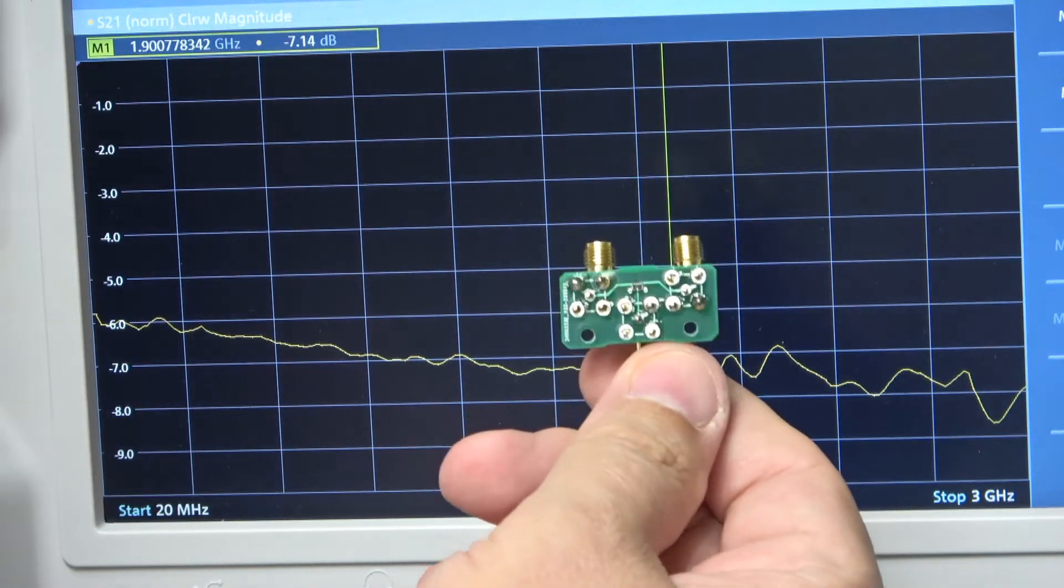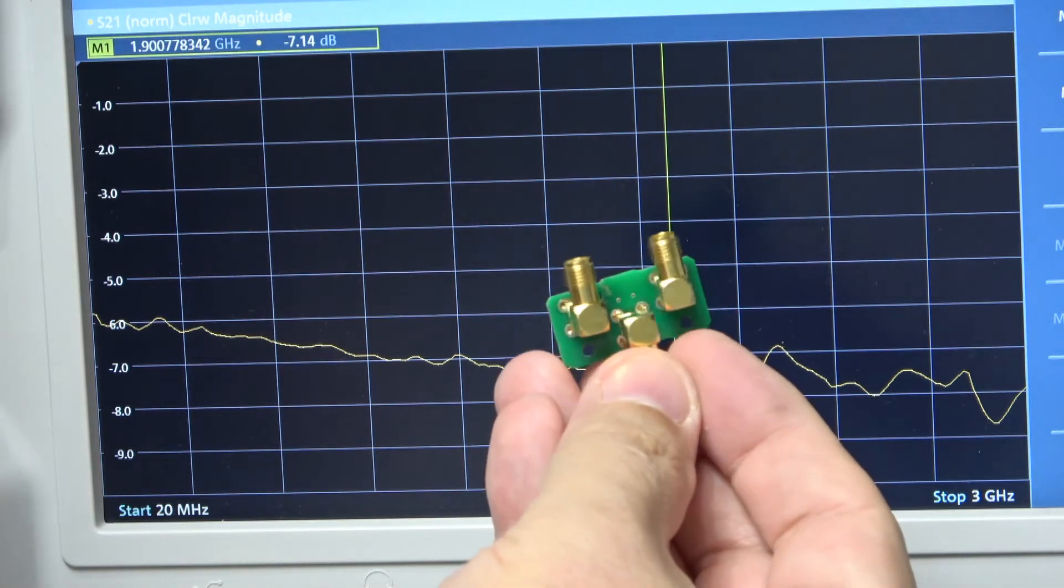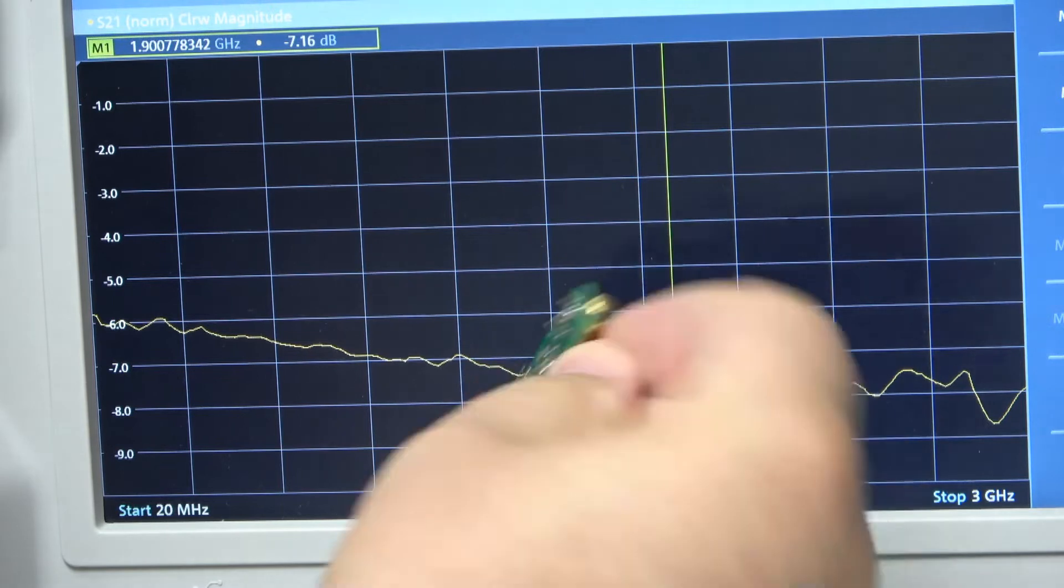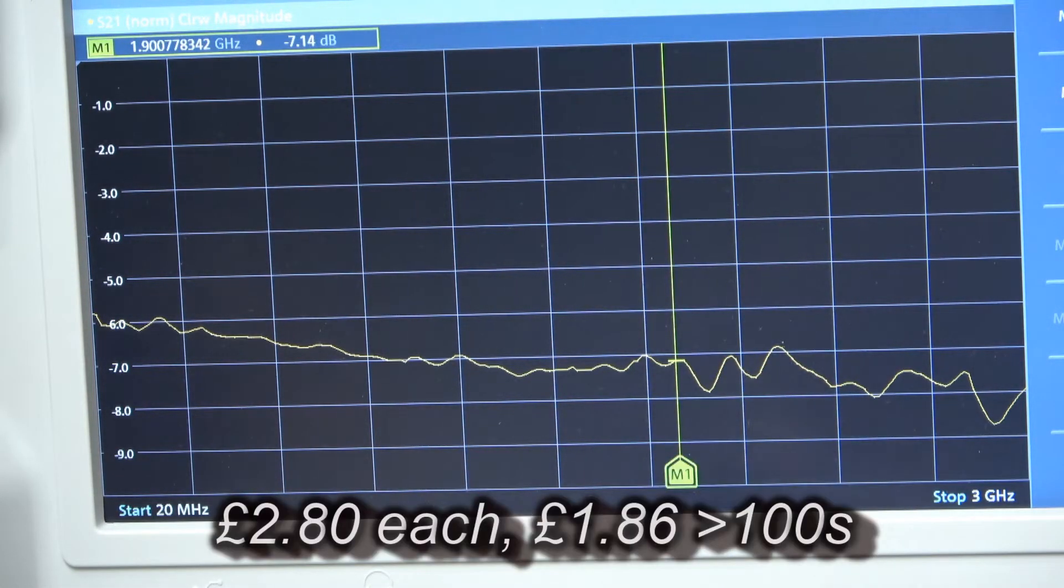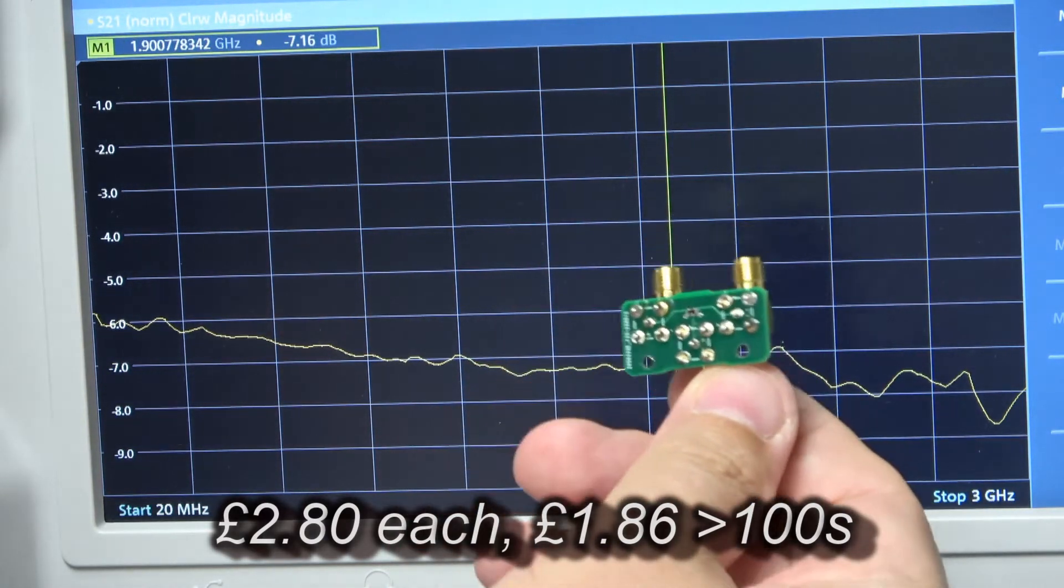Admittedly this has got a resistor array on it and it's physically a little bit smaller, but the size is neither here nor there. Use a resistor array but it's outperforming this by a serious amount. That resistor array is about £2.30 or probably £1 something if you buy them in the hundreds.